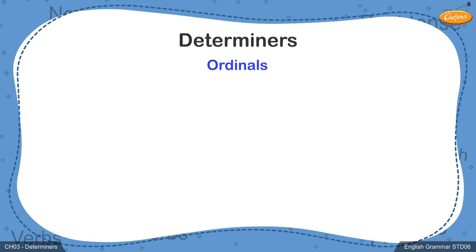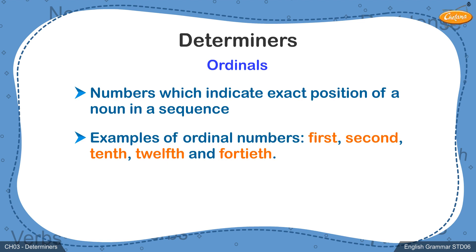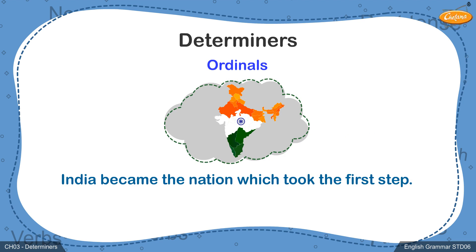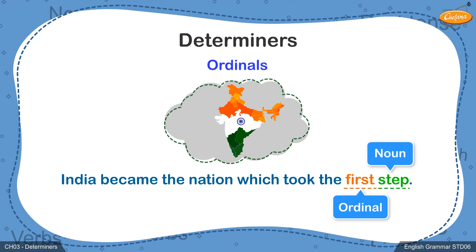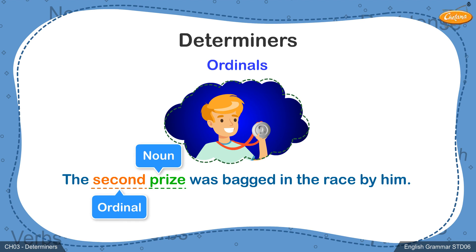Next, we move on to ordinals. Ordinals are numbers which indicate the position of a particular thing or person in a given order. Numbers such as 1st, 2nd, 10th, 12th and 40th are called ordinal numbers. Let's read the following examples and see how such ordinals can function as determiners in a sentence. The first sentence is: 'India became the nation which took the first step.' Here, the ordinal 'first' is written before the noun 'step', telling us more about how India ranked first amongst other nations to take a step. In the next example, we use the ordinal number '2nd' to specify that the boys stood 2nd in the race. Hence, '2nd' becomes the ordinal determiner.